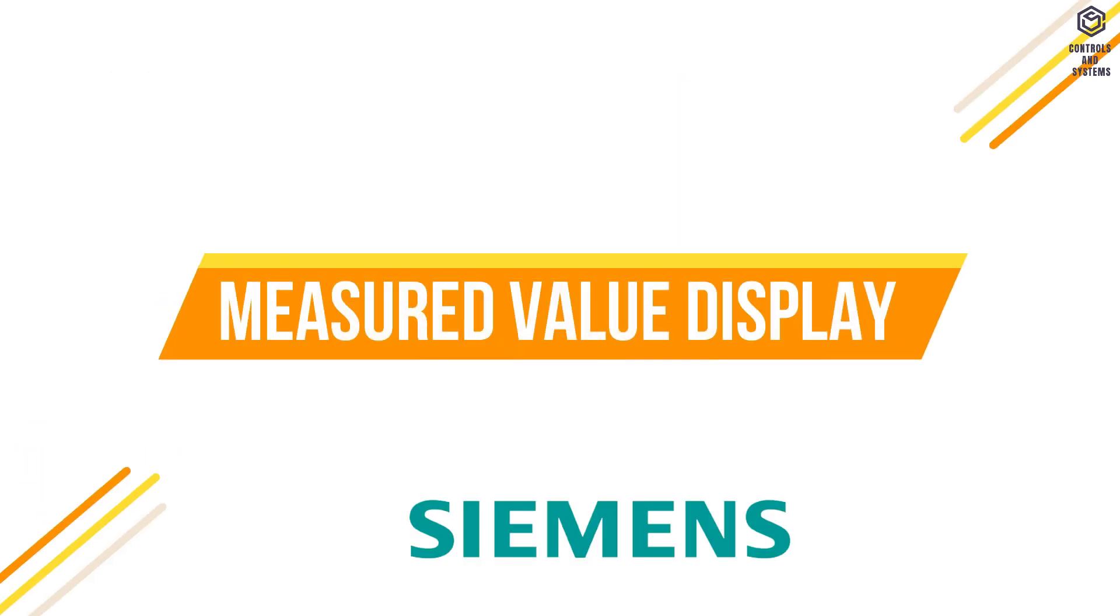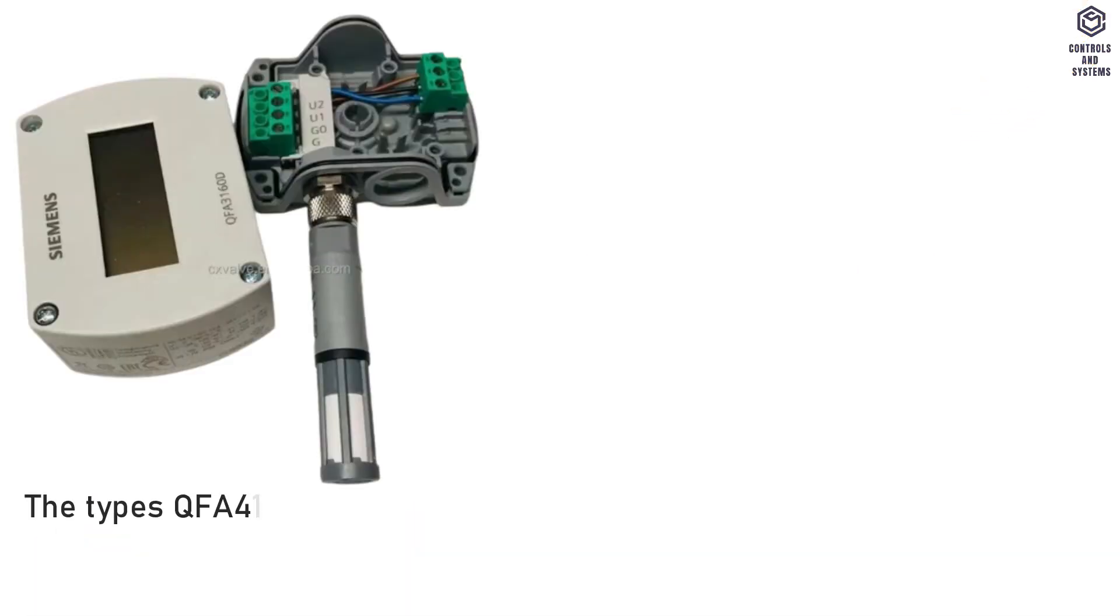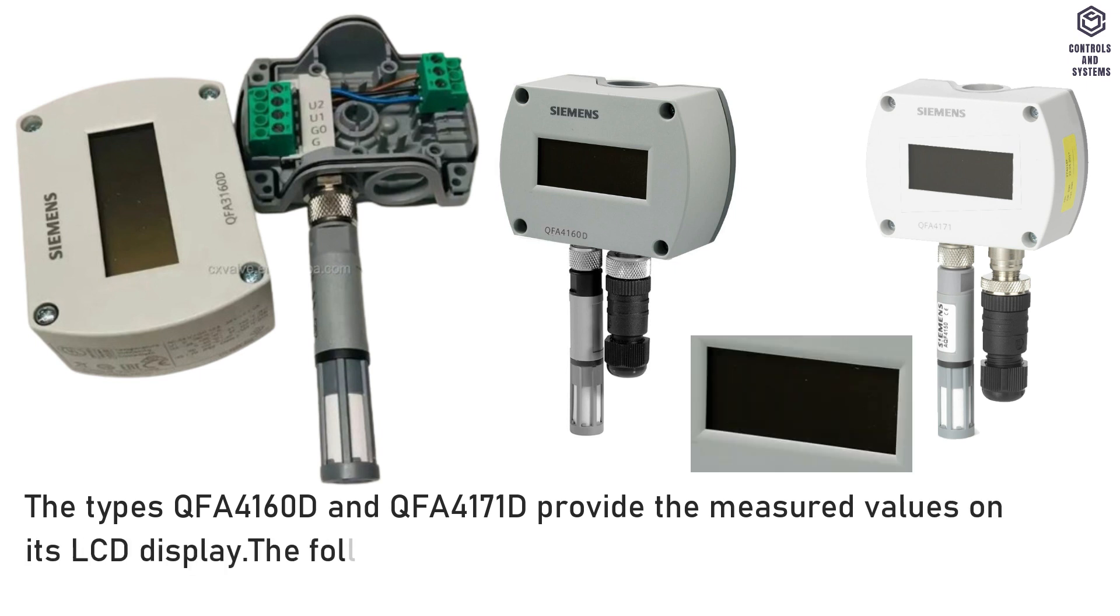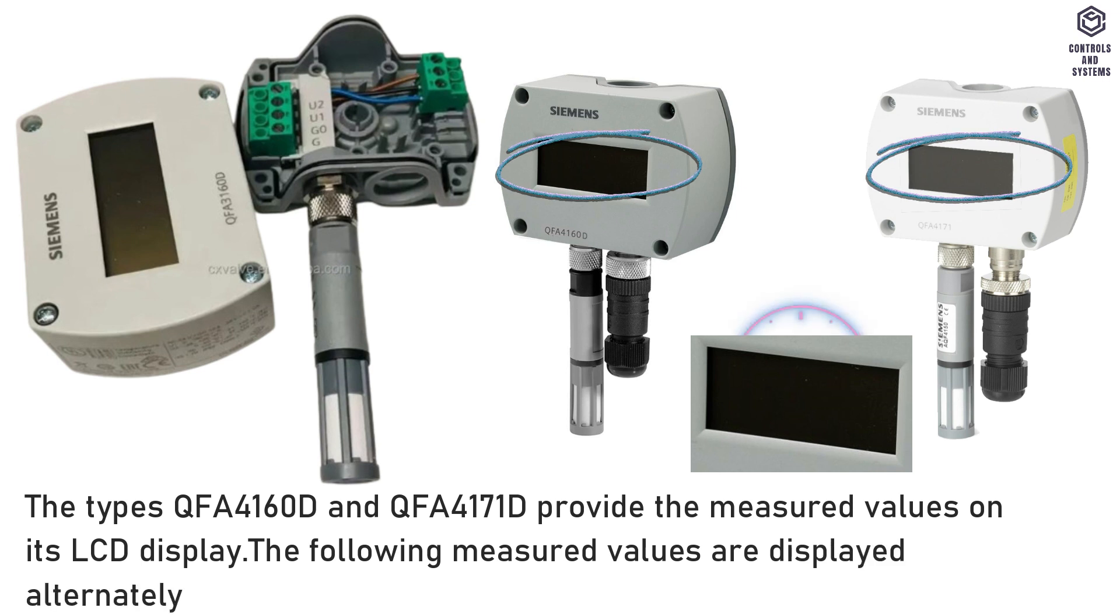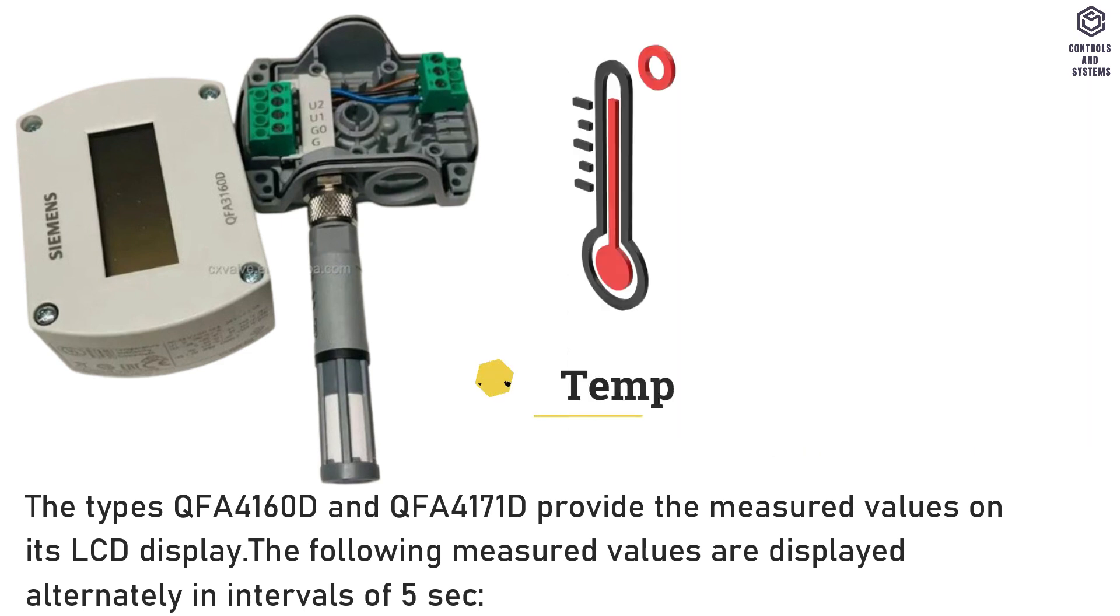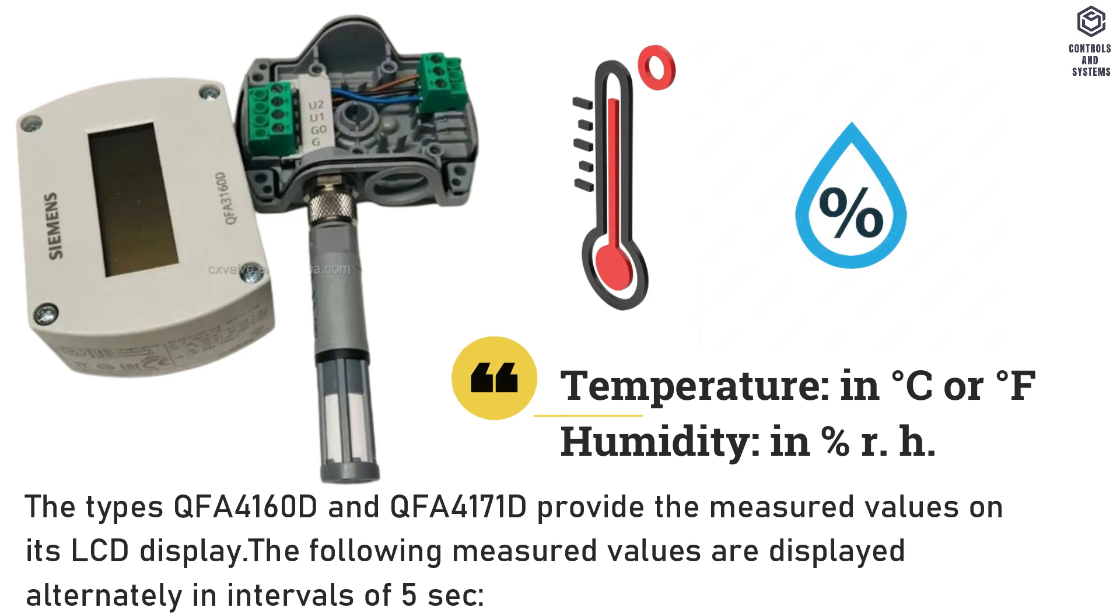Measured value display. The types QFA4160D and QFA4171D provide the measured values on its LCD display. The following measured values are displayed alternately in intervals of 5 seconds: temperature in Celsius or Fahrenheit, humidity in percent RH.